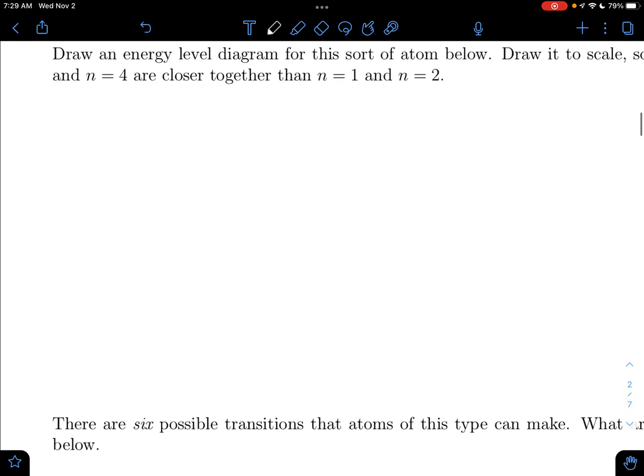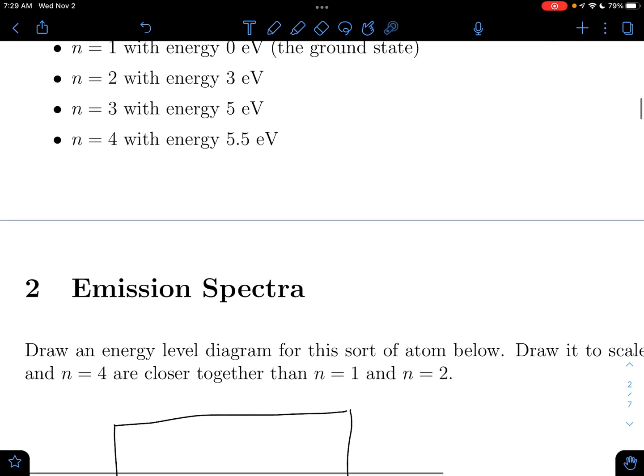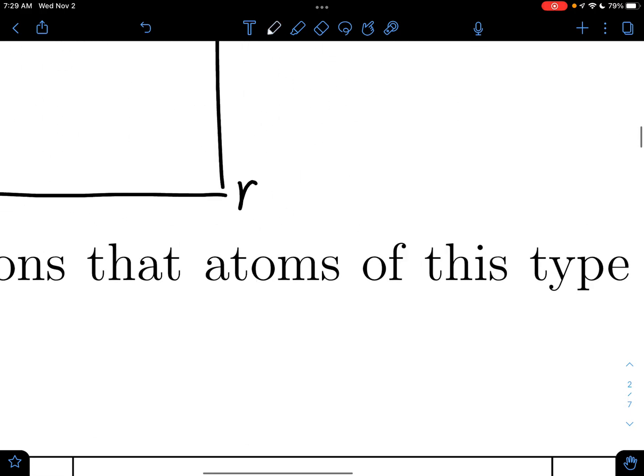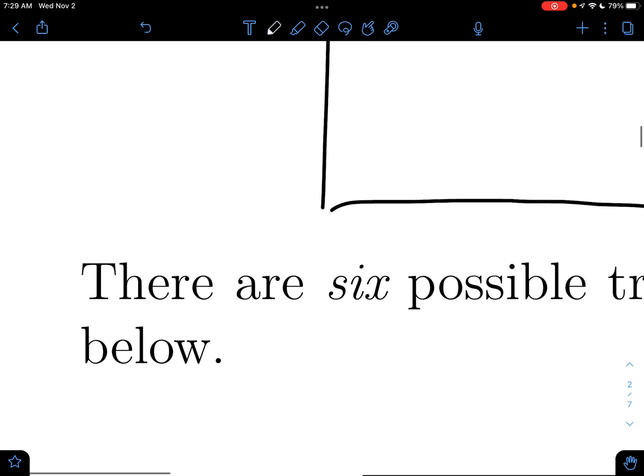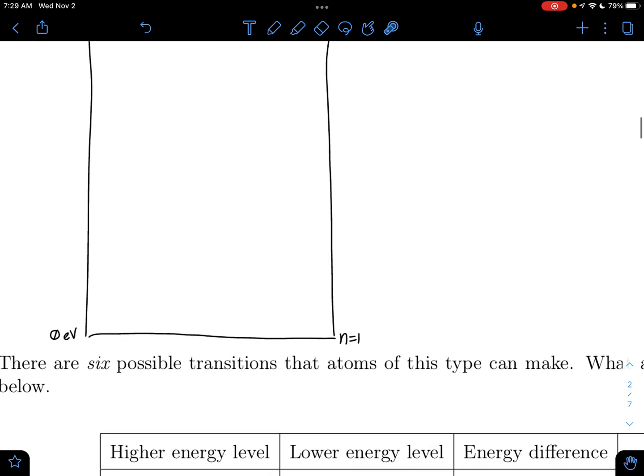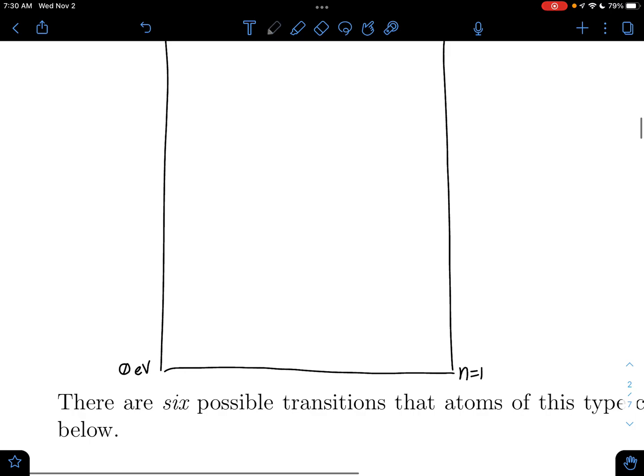And I like to think about the energy levels as floors in a building. So if I draw my building, we start at our ground floor, or our ground state, and have n equals 1, so I have 0 eV. I think of my energies as heights in my building. I'm 0 meters off the ground, I'm on my first floor. I go up, ooh, that is not to scale.